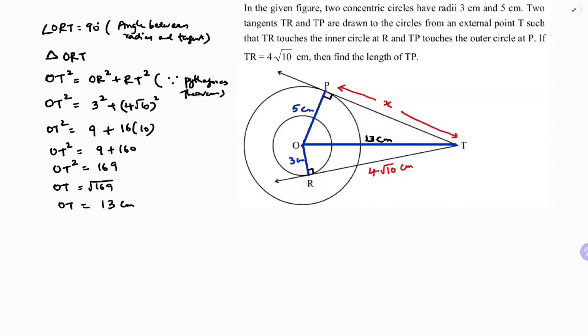Now I will take triangle OPT. So in triangle OPT, angle OPT is 90, reason same, angle between radius and tangent. So if I apply Pythagoras theorem in this triangle, see, 90 is over here, so hypotenuse is OT.